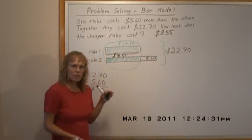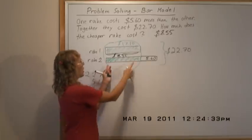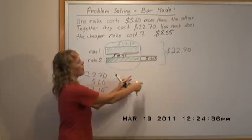If it asked for the price of the more expensive rake, then you would add $8.55 and $5.60 to get that.